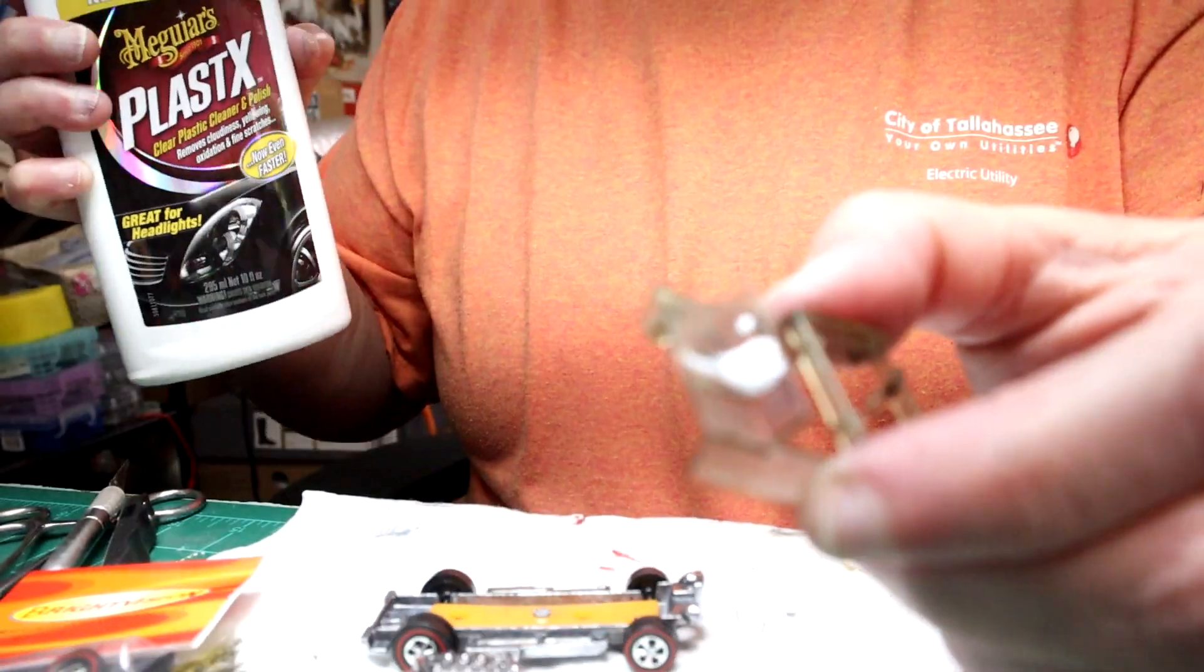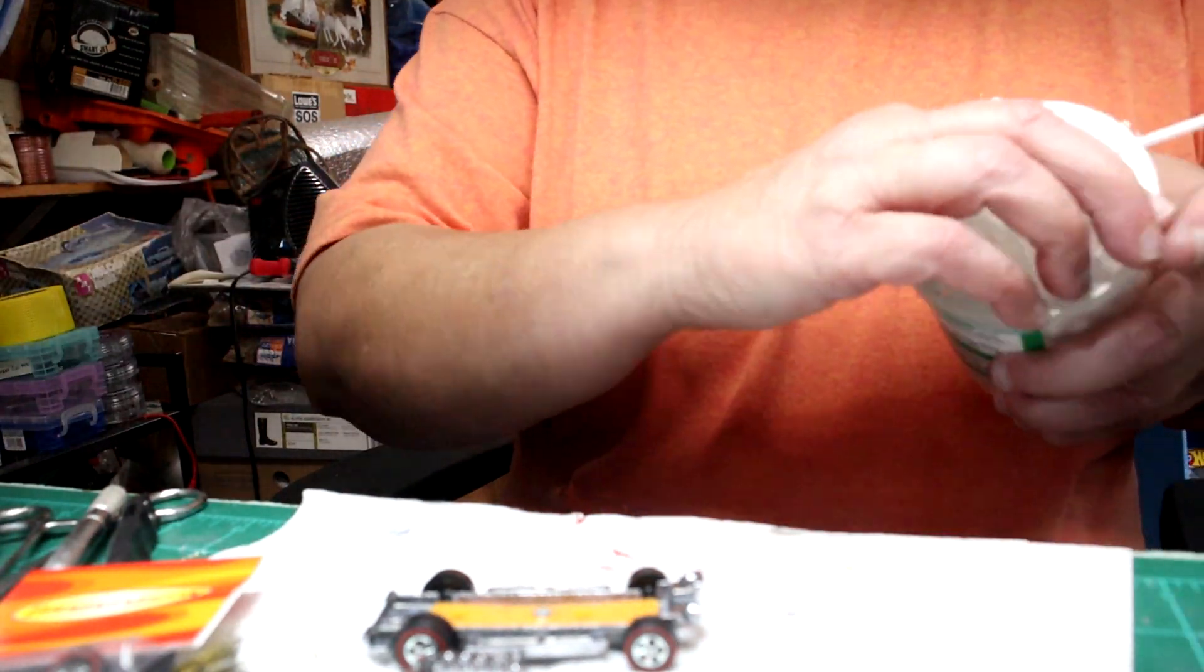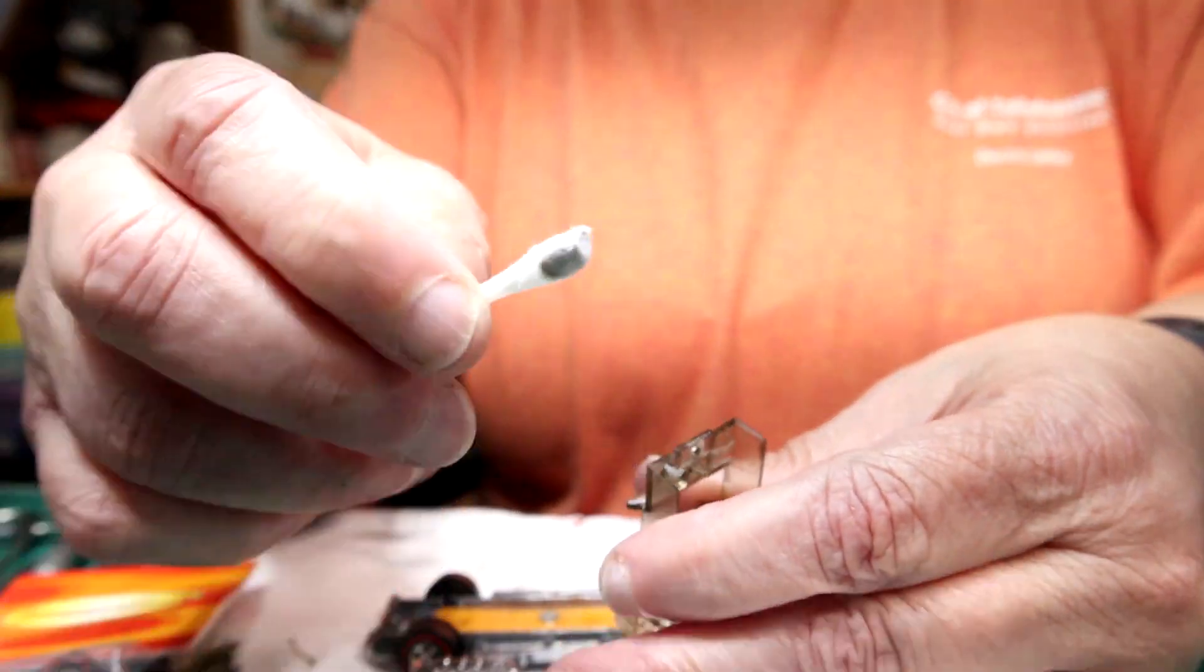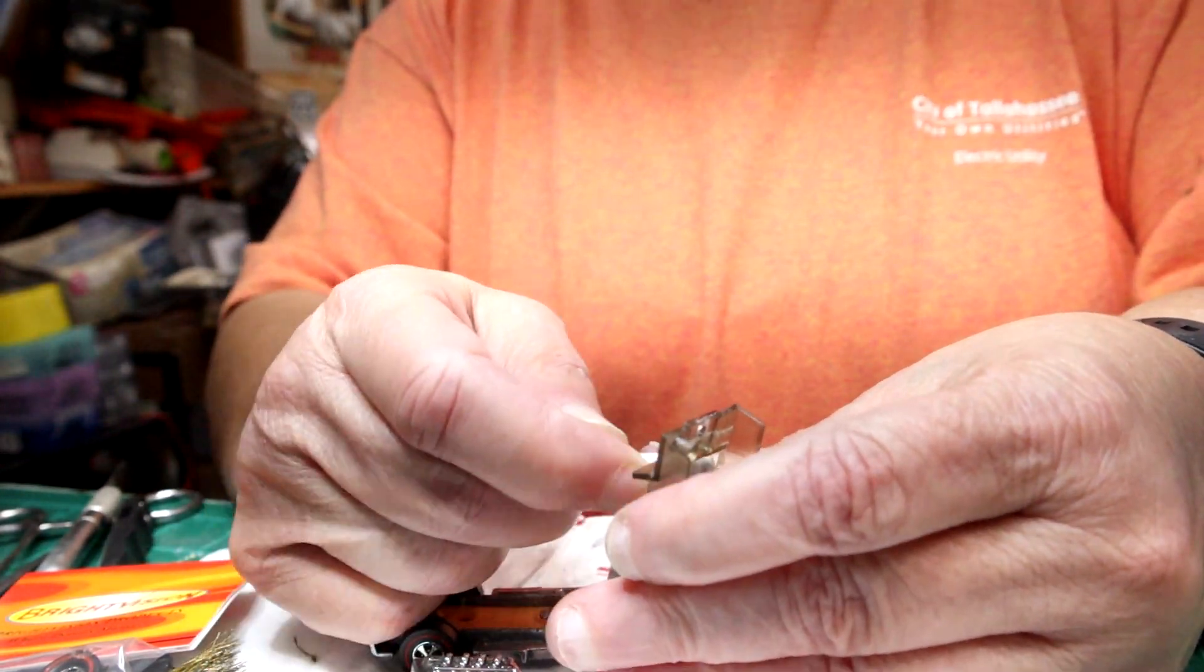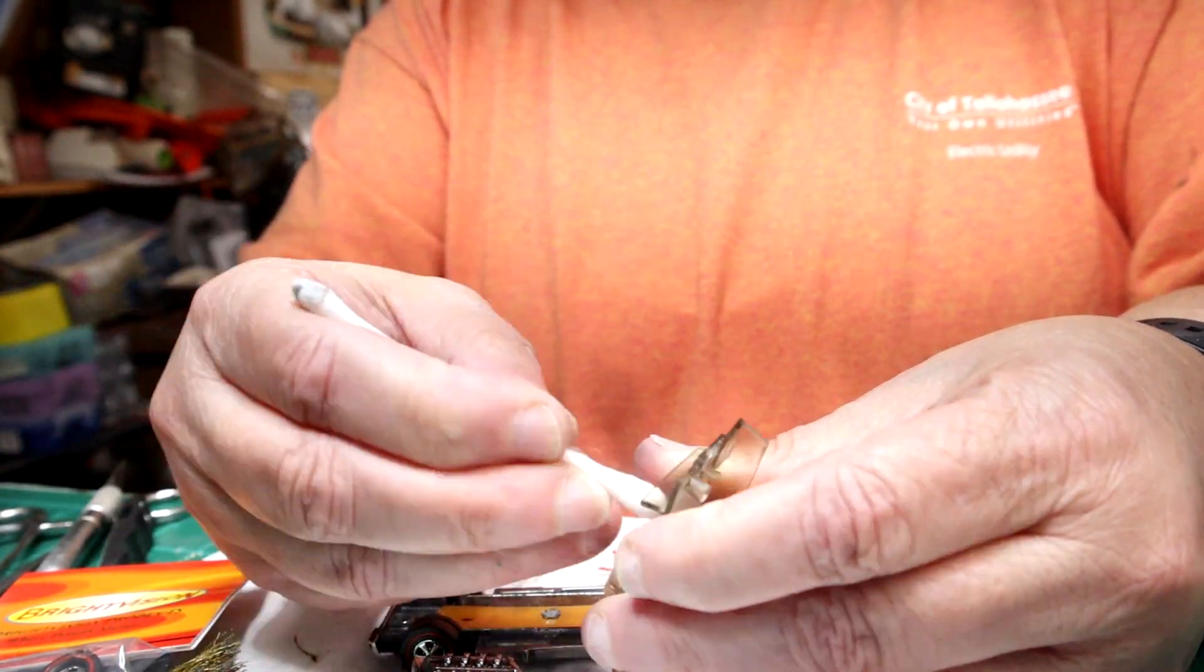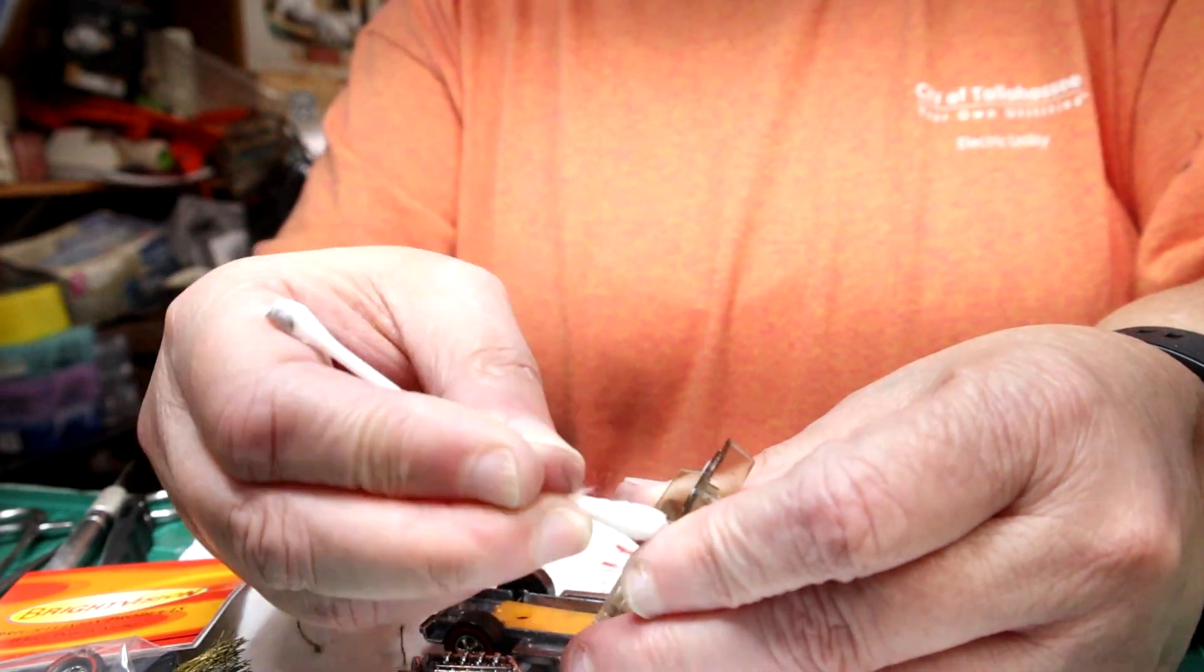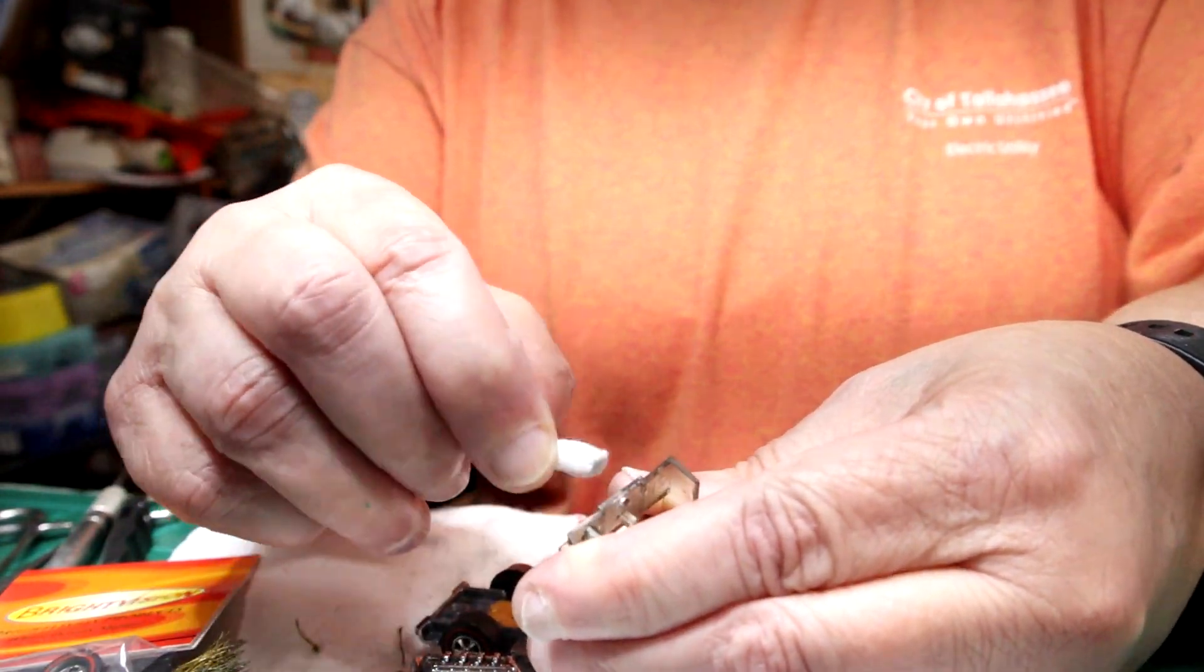Now we're going to get to the windshield. I like the Meguiar's. Use it with a Q-tip. Work it on there, and you'll eventually hear it squeaky. You can see it turning black on the Q-tip. Flip over to the other side. Now you can do gauzy, you can do the Pledge Floor Shine, whatever. This one was in pretty good shape, so I just went with it that way.